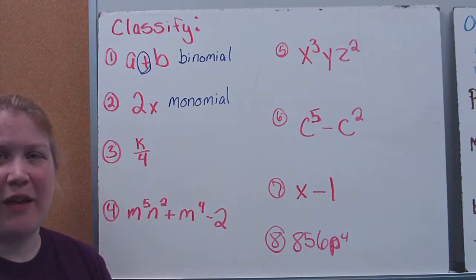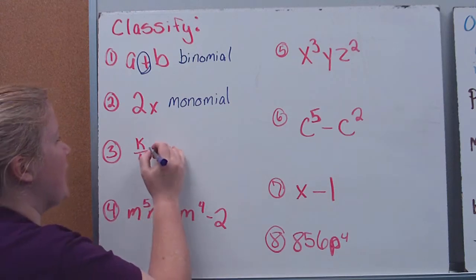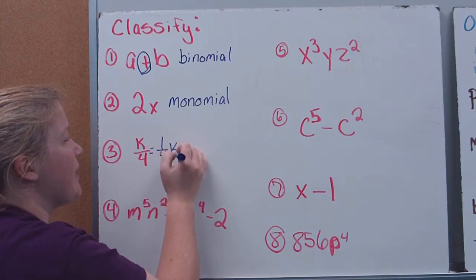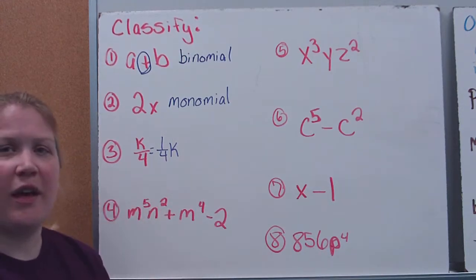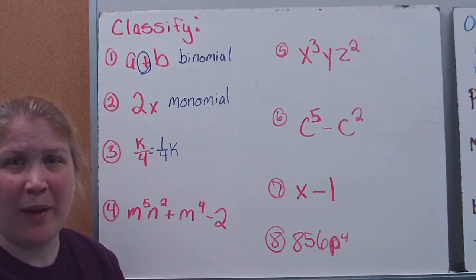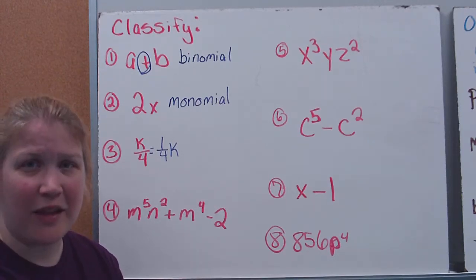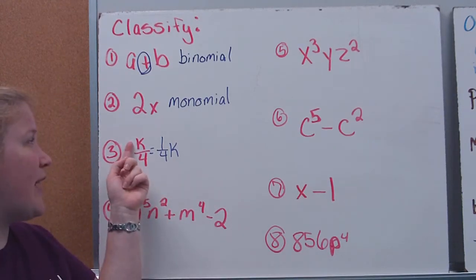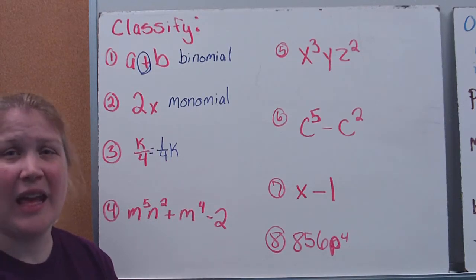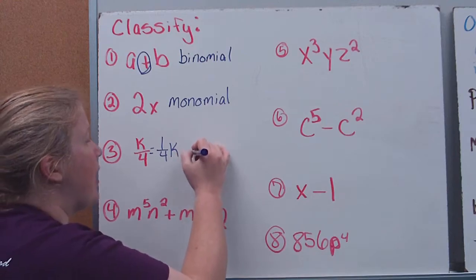K divided by 4 is still a monomial because we could rewrite this as one-fourth times K. If the variable was on the bottom, it wouldn't be a polynomial — we can't divide by the variable. But since the variable's on top and we could write it as one-fourth times K, this means I have one term — a monomial.